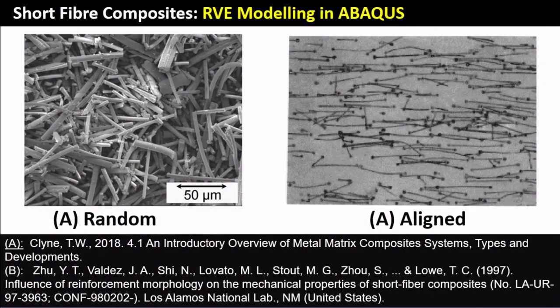The first thing we need to do is look at the micrographs of a short fiber composite. There are two possibilities: you could have a random arrangement of fibers, or an aligned arrangement. The random ones are easier to design — these are essentially the chop strand mats. The aligned ones require a little bit of care, but you tend to have better properties with the aligned arrangement compared to the random distribution.